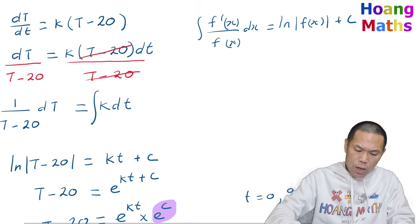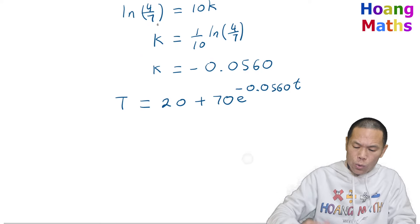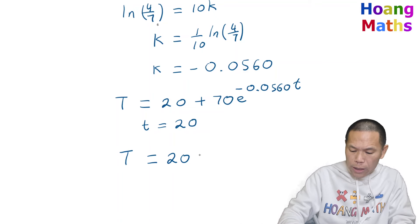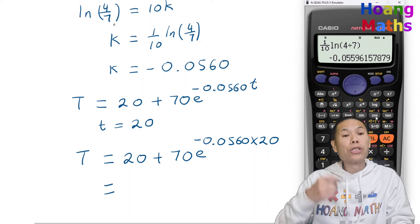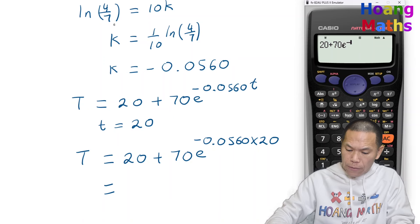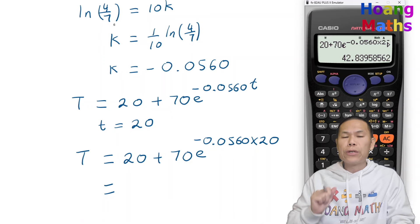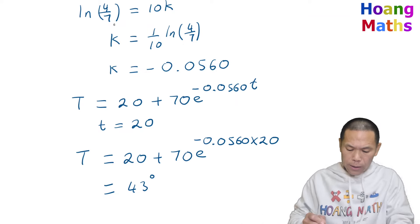We need to find the temperature of the coffee when t equals 20 minutes. So T equals 20 plus 70·e^(−0.0560 times 20). Using a calculator that gives approximately 42.83 degrees Celsius, which correct to the nearest degree is 43 degrees Celsius.